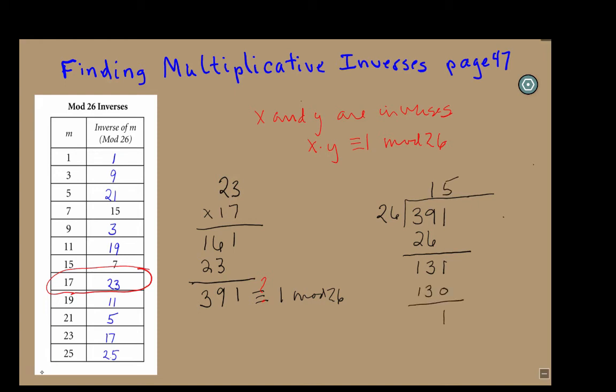But when I complete the multiplication, I see that I get 15 with the remainder of 1, and that means that 391 is congruent to 1 mod 26.